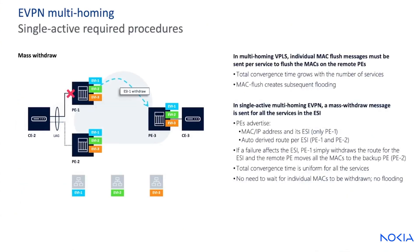There are also some required procedures for single-homed deployments. Back when we had VPLS — our previous L2 technology of choice — we learned some lessons that have really helped us increase scalability. In a multi-homing VPLS, individual MAC flush messages had to be sent per-service in order to flush the MACs on the remote PEs. The total convergence time would grow with the number of services, and the MAC flush would create subsequent flooding as MAC address learning had to occur. In single-active multi-homing EVPN, a mass withdrawal message is sent for all the services in the ESI. Total convergence time is uniform for all services, and there is no need to wait for individual MACs to be withdrawn — and there is no flooding.